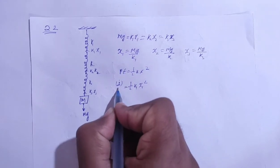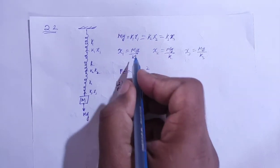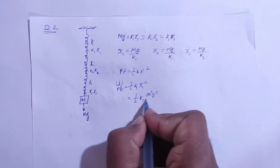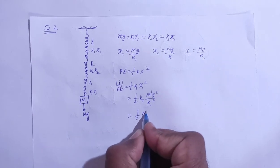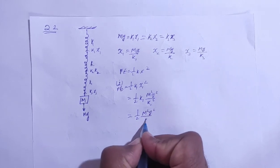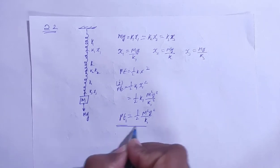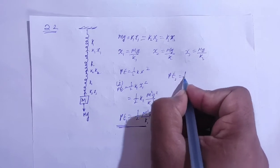The potential energy will be half k1 x1 square. So in place of x1 we can substitute mg by k1, which gives m square g square by k1 square, so our answer is half m square g square by k1. This is the potential energy in spring one.